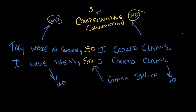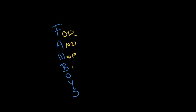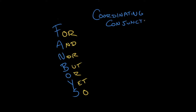This sounds like a lot to remember — how do you keep all these coordinating and subordinating conjunctions straight? Fortunately, there are only seven coordinating conjunctions in English, and I like to keep them straight using the FANBOYS mnemonic: For, And, Nor, But, Or, Yet, and So. That's all you need to remember — just FANBOYS.